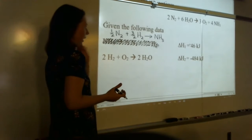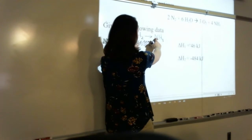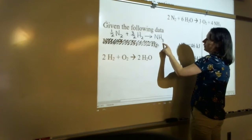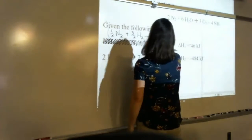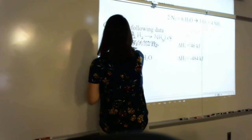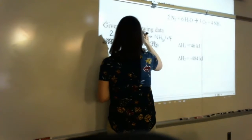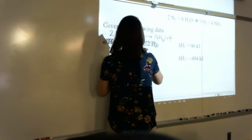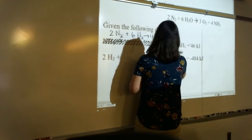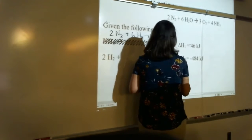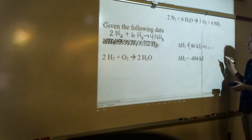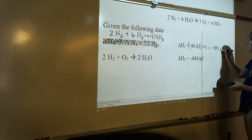Now we need to match coefficients. We need 2 N₂ and 4 NH₃, but currently have ½ and 1. So multiply the whole thing by 4: 4 × ½ = 2, 4 × 3/2 = 6, and 4 × 1 = 4. We also multiply delta H by 4: -46 × 4 = -184 kJ.